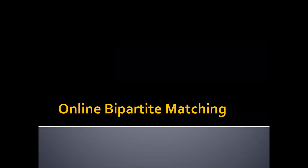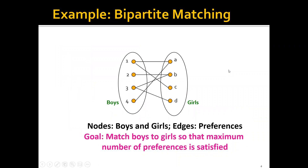Now let's start with one particular problem called online bipartite matching. What is bipartite matching? For example, let's say that we have four boys on the left and four girls on the right — so in total, we have eight nodes. The edges represent the preferences between the boys and girls, and the goal of the bipartite matching problem is to match the boys to the girls such that the maximum number of preferences is satisfied.